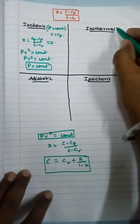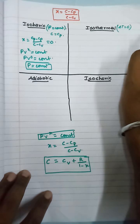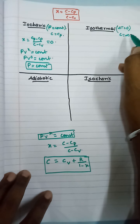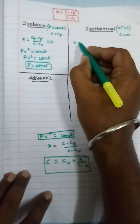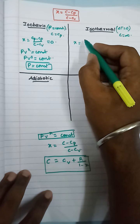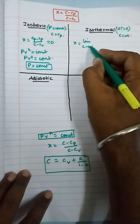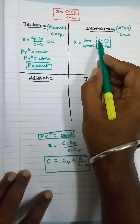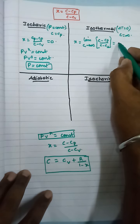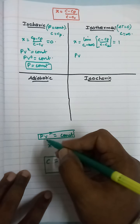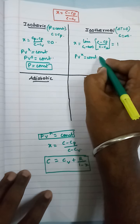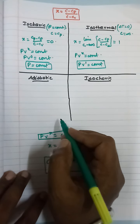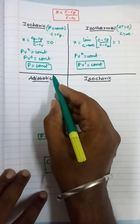For the isothermal process, the change in temperature is zero, meaning temperature is maintained constant. In that case, C is considered as infinity. Substituting into the relation, X equals the limit as C tends to infinity of (C minus CP) by (C minus CV). When C is infinity, the infinity terms cancel and X equals 1. By the polytropic relation, PV power 1 equals constant. This is the relation for the isothermal process.